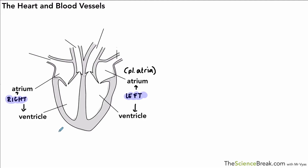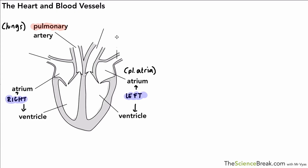The rest of the labels are to do with the blood vessels that go into and leave the heart. Two that we're going to start with are the pulmonary artery — any time you see the word pulmonary it's often to do with the lungs, so this is the artery that goes to the lungs. Once it's gone to the lungs and comes back, it will return via the pulmonary vein, coming back from the lungs. So that's two major blood vessels related to the heart.